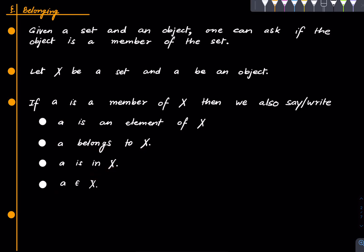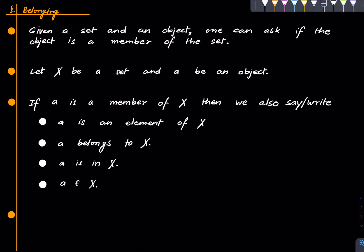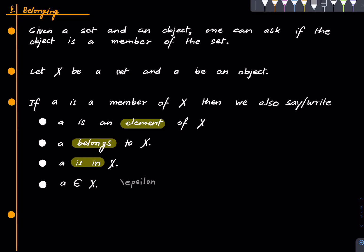For instance, suppose x is the set {1, 2, 3} and our object is the number 2 — then 2 is a member of x since 2 is sitting inside the set. So we write 2 ∈ x. This symbol is like a curly e, and in LaTeX you can generate that symbol using the appropriate command.